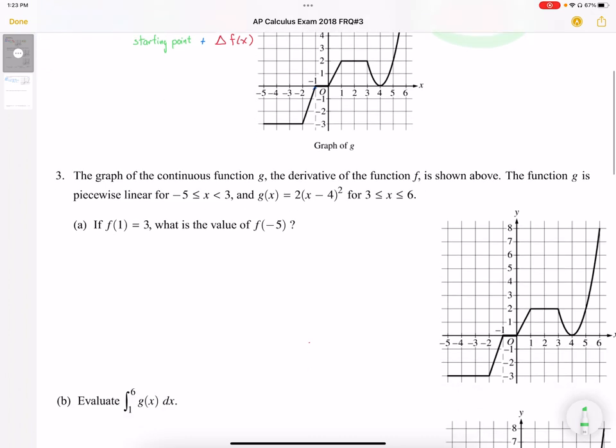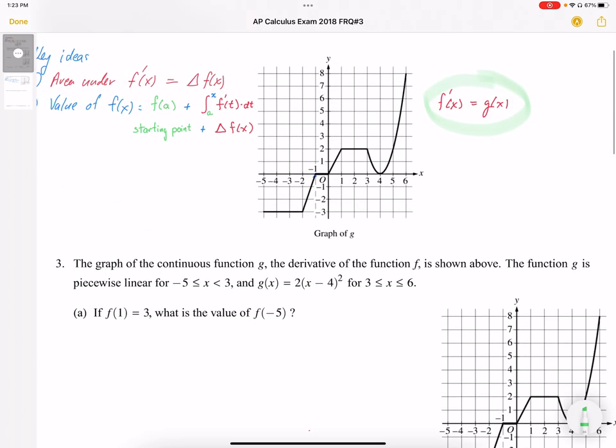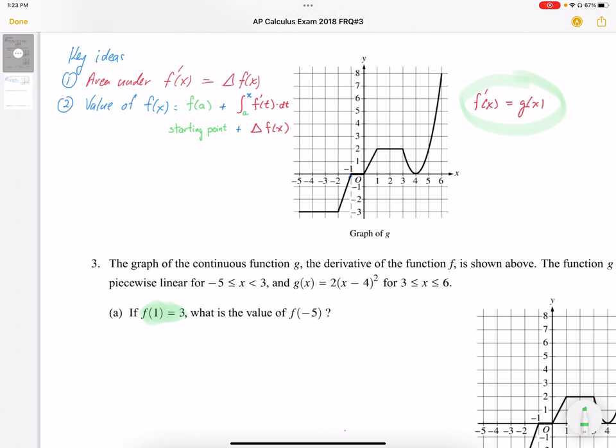Part a asks, if f of 1 equals 3, what is the value of f of negative 5? Well, that f of 1 equals 3 establishes that, sorry, that gives us the starting point. So that starting point that we have in point 2 here, the f of a, that represents our starting point.